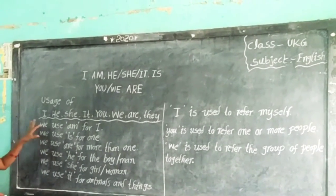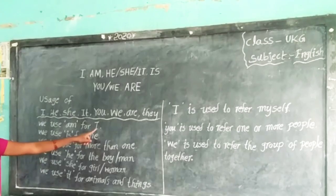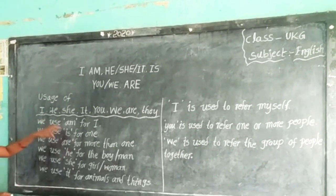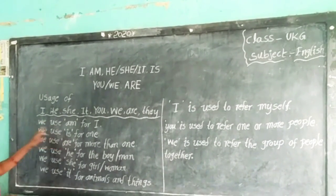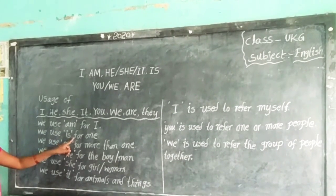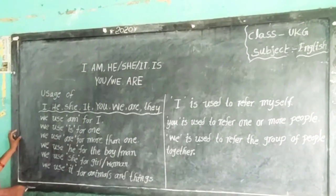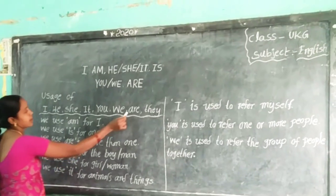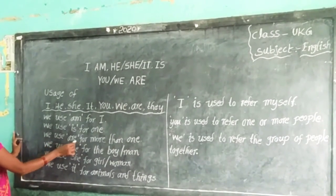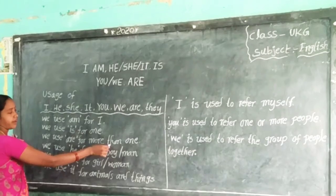We use 'am' for I. Second one: 'is'. We use 'is' for one. Next: 'are'. We use 'are' for more than one.